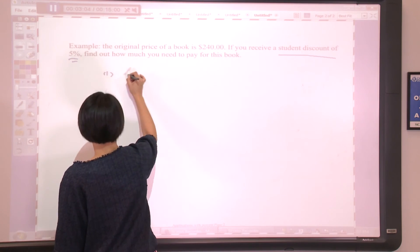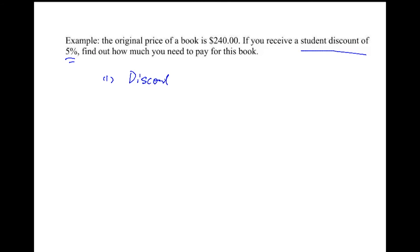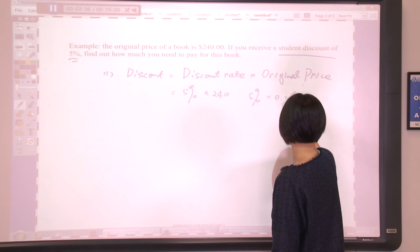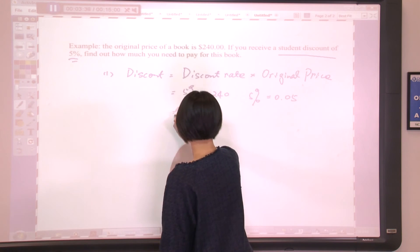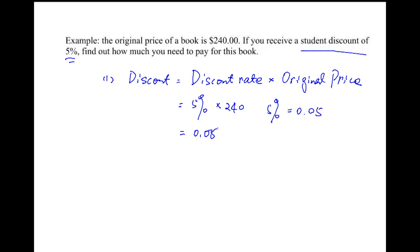First, we need to find out how much discount we can receive. Discount comes from discount rate times the original price, which is 5% times $240. We need to convert 5% into a decimal number, which is 0.05. So the discount you can receive would be 0.05 times $240. That is $12.